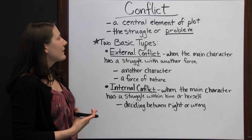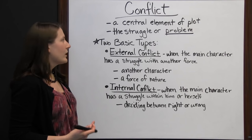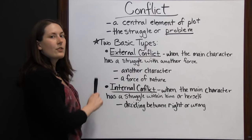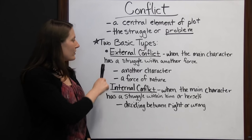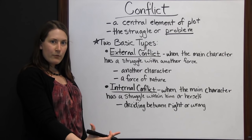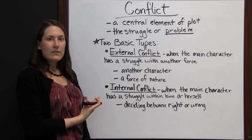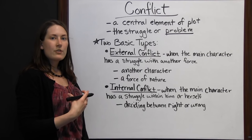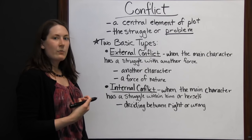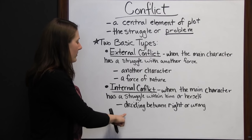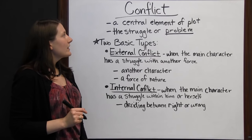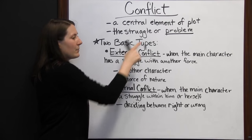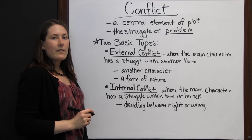Whenever you're looking for conflict in a story, look at what the main problem is. To delve deeper, ask yourself if it's external — when a character is struggling with another force, like another character or a force of nature — or internal — when the main character has a problem within him or herself. Just keep saying to yourself: a conflict is a problem. That should help you figure out what the conflict is in any story.